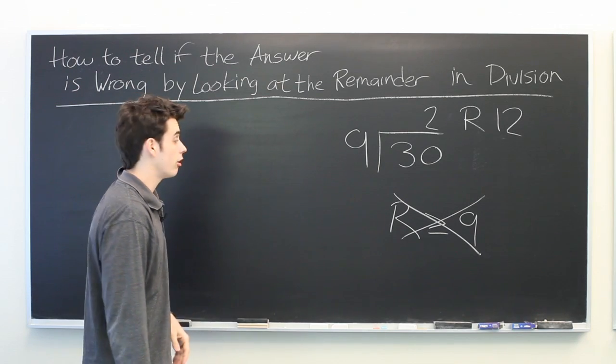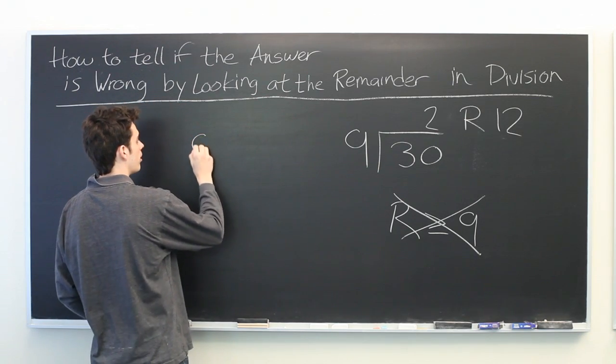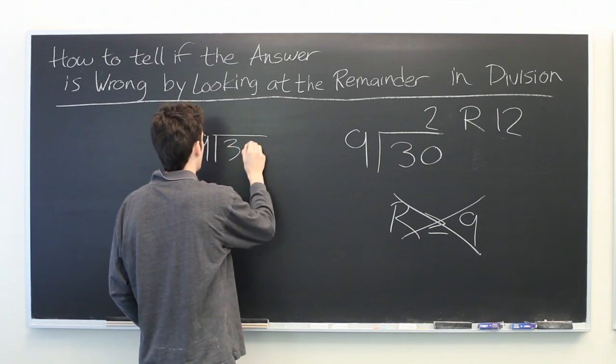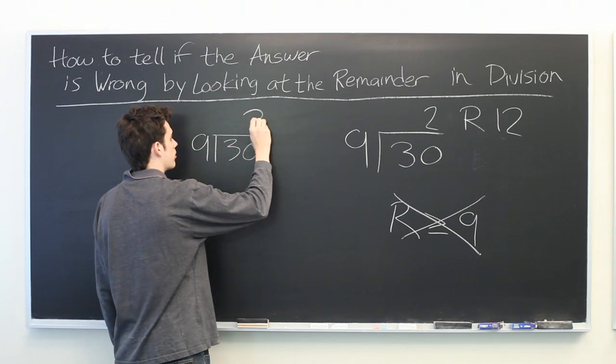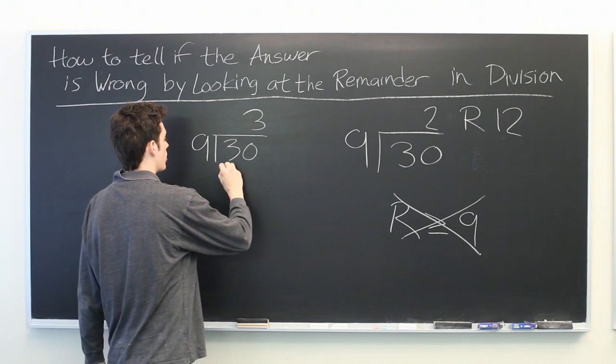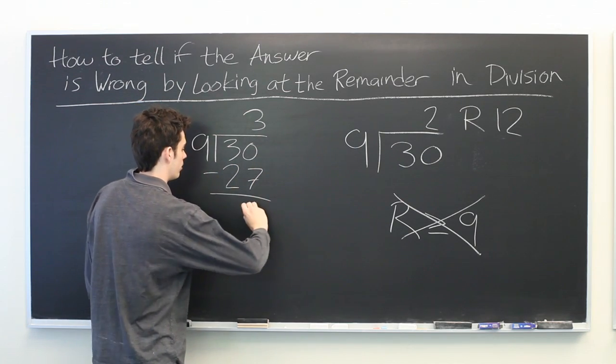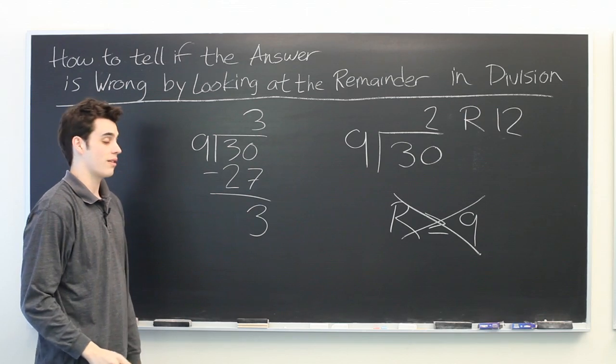So if we do this again a little bit more carefully, 9 goes into 30, 9 times 3 is 27, 30 minus 27 is 3.